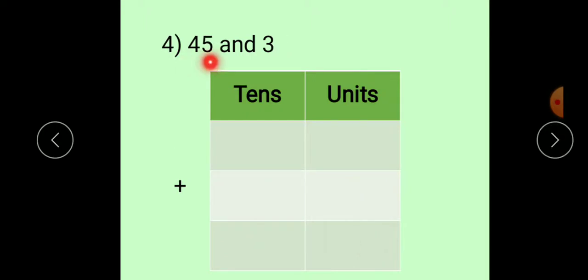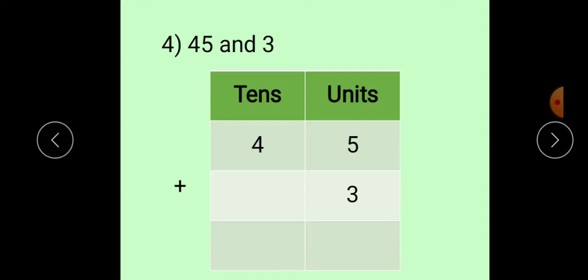Next is 45 and 3. First of all, write down the places: tens and units. After that, write the number. First number is 45, so 4 is at tens place and 5 is at units place. Sign of addition is plus 3. As only one digit is here, it is in the units place. So, write this number in the units place. Now, we will add these two numbers. Keep 5 in your mind, take out your three fingers. 5 plus 3 equals 8. Then, 4 plus nothing means 0. So, 4 plus 0, the answer will be 4. Answer is 48.